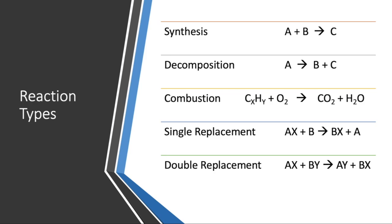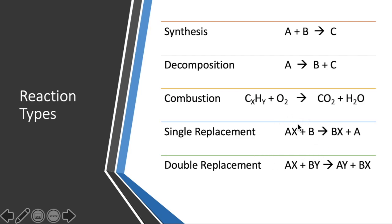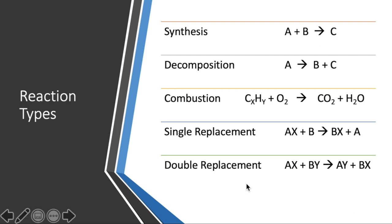Based just on reactants, you can identify a decomposition reaction pretty easily — it only has one reactant. If you have two reactants and they're elements, synthesis is the most likely candidate because it's when two elements react and form a compound. If you have one element and one compound, it could be single replacement. But it could also be a synthesis reaction where two different things combine to form some larger thing. And if both reactants are compounds, it's likely going to be double replacement, though it could still be synthesis depending on what you see in the products.